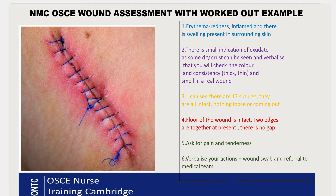We're now going to look at the sutures. I can see this wound has 12 sutures — they are all intact and none of them are loose or coming out. Next we move on to the floor of the wound. The floor looks okay at the moment; the two edges are together with no significant gap, so the edges are well approximated.